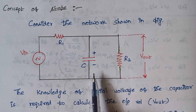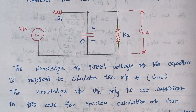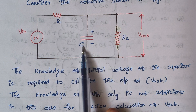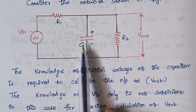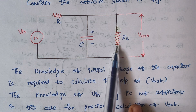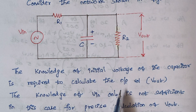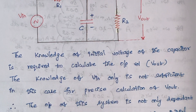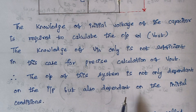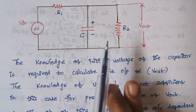It is a must to check the voltage across the capacitor before we calculate the output voltage. The knowledge of the initial voltage of the capacitor is required to calculate the output voltage. We are considering only the capacitor, not the resistor, because capacitor and inductor are energy storage elements, whereas a resistor won't store any energy — it dissipates energy in the form of heat. So the initial voltage of the capacitor is mandatory to calculate the output voltage.